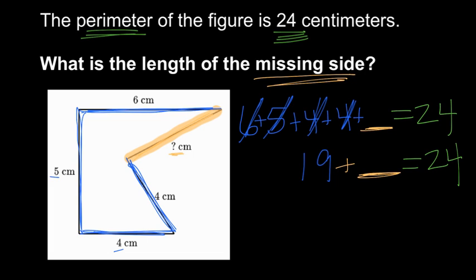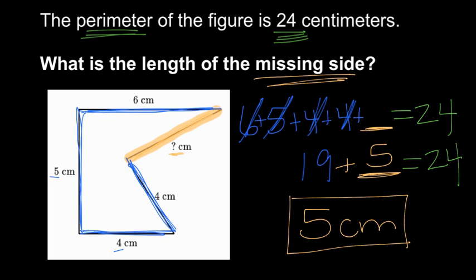19 plus one more is 20, and then plus four more to 24, so one more to 20 and four more. That's a total of five more. So the missing side length is five centimeters. This side must be five centimeters in order for the total perimeter to be 24.